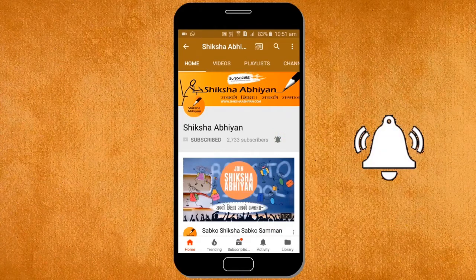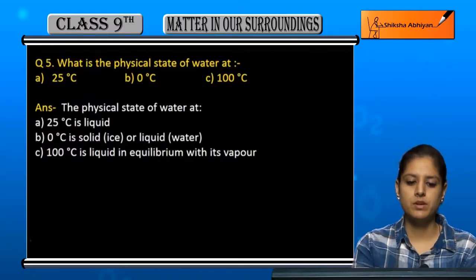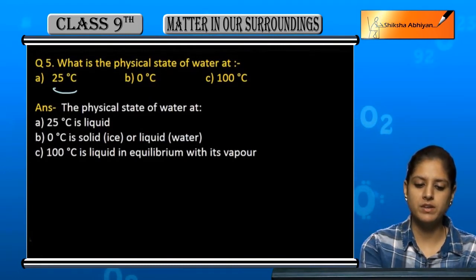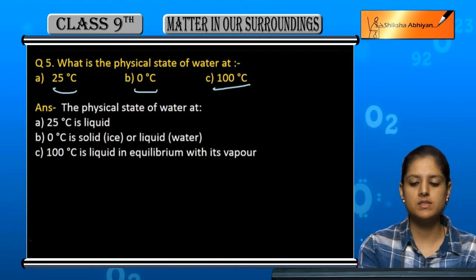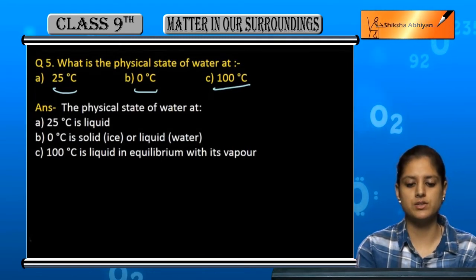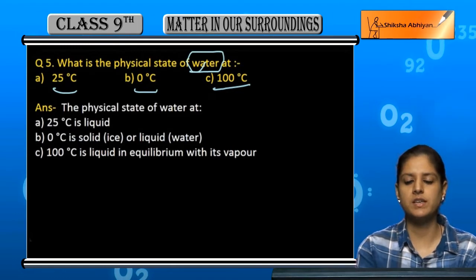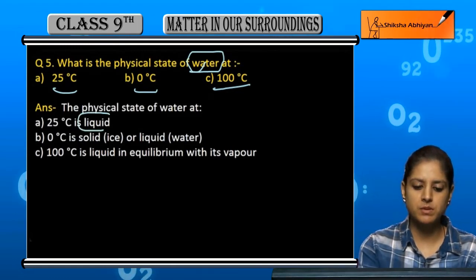Question number five: What is the physical state of water at 25 degree Celsius, 0 degree Celsius, and 100 degree Celsius? In temperatures pe water ki physical state kya hai yeh mein batani. So 25 degree Celsius pe